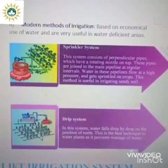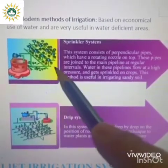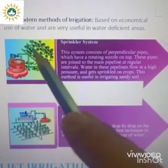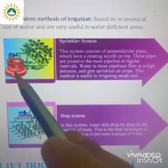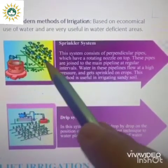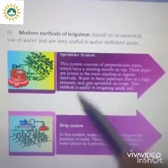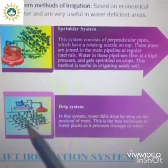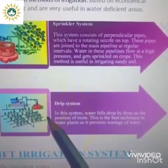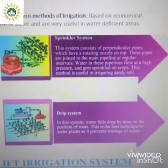Modern methods of irrigation are of two types based on economical use of water, and are very useful in water-deficient areas. The first is the sprinkler system, which consists of perpendicular pipes joined to the main pipeline at regular intervals. Water flows at high pressure through the main pipeline and gets sprinkled on crops — this method is very useful for irrigating sandy soil. The second is the drip system, where water falls drop by drop directly at the position of the roots of each plant. This is the best technique to water plants as it prevents wastage of water.